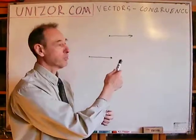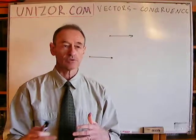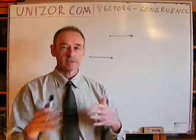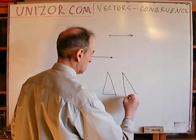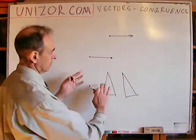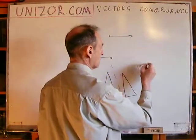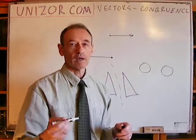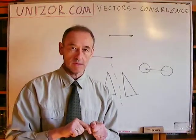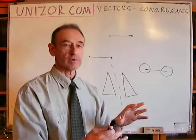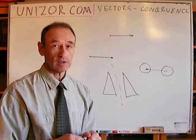So basically, two parallel vectors from two different origin points but with exactly the same length are congruent. Congruence in geometry is usually related to some process of transformation. For example, this triangle is congruent to this triangle because I can reflect and shift it and they will coincide. Two circles of the same radius are congruent because I can parallel-shift one and it will coincide with another. This superposition is important for congruence in geometry.